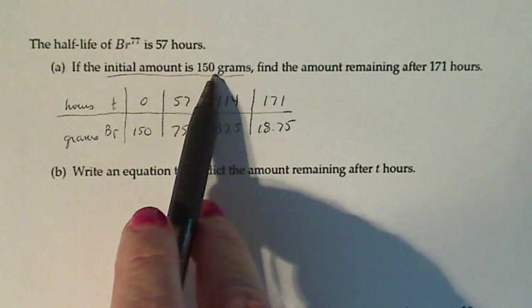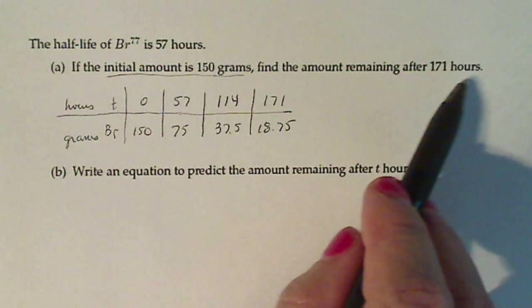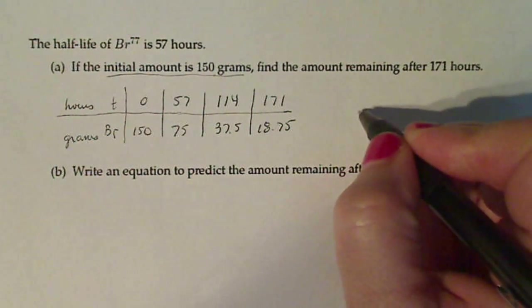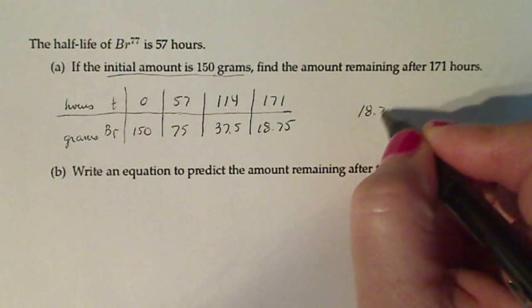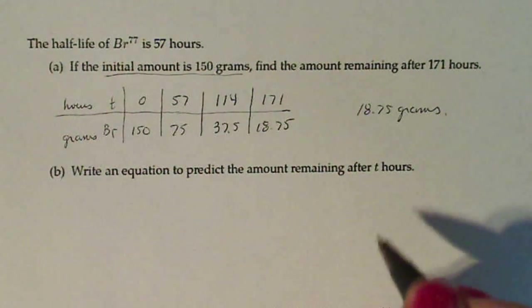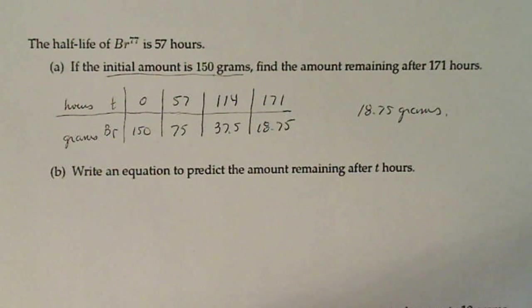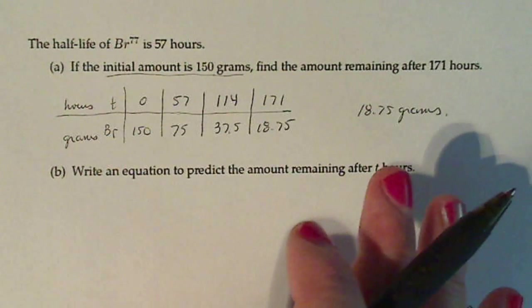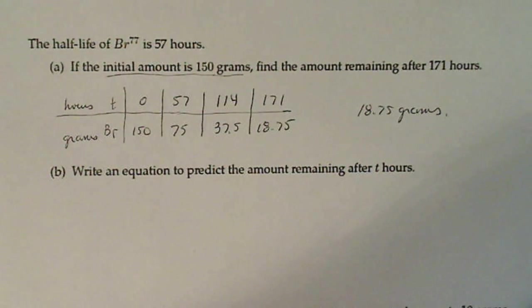If the initial amount is 150, find the amount remaining after 171 hours, and you would say 18.75 grams. Always answer the question that they pose. Don't just put the chart and assume that whoever's reading or grading your paper is going to know where to look.